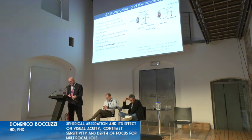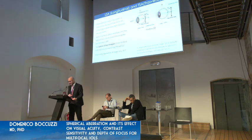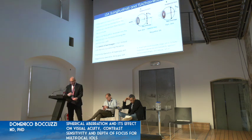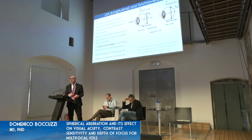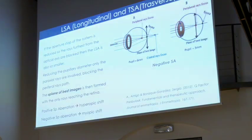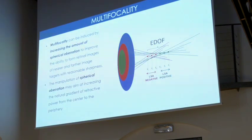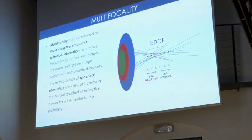The plane of best image is then formed only with the rays reaching the retina. When we have positive spherical aberration, we have lower vergence in the center of the cornea. With negative spherical aberration, we have a myopic shift because only the central part of the cornea with higher power is involved. Playing with spherical aberration, we can induce multifocality by manipulating Z40 and Z60 to control the longitudinal spherical aberration and increase the depth of focus.